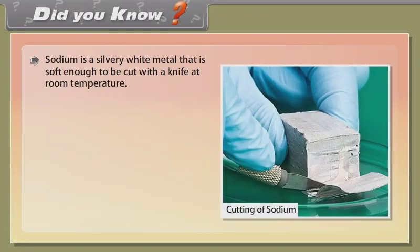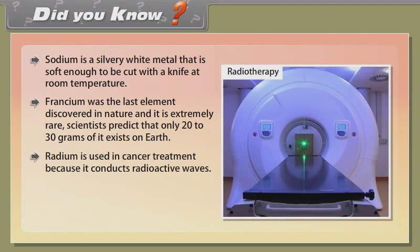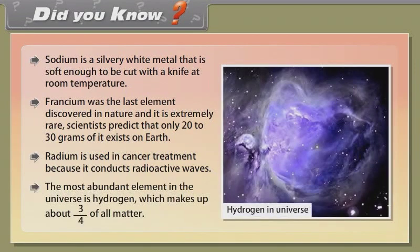Did you know? Sodium is a silvery white metal that is soft enough to be cut with a knife at room temperature. Francium was the last element discovered in nature and is extremely rare; scientists predict that only 20–30 grams of it exist on Earth. Radium is used in cancer treatment because it emits radioactive waves. The most abundant element in the universe is hydrogen, which makes up about three-quarters of all matter.